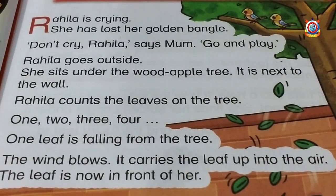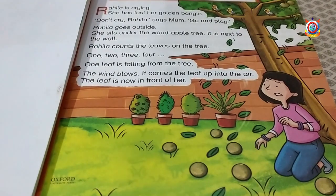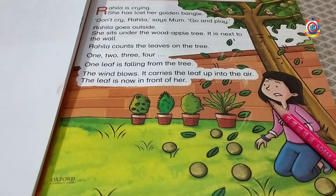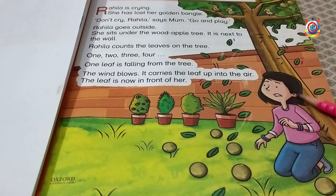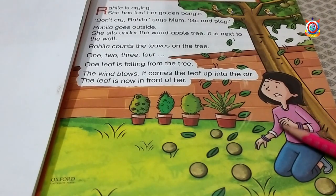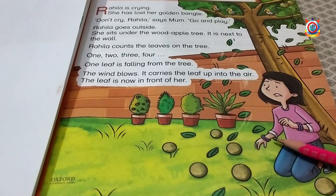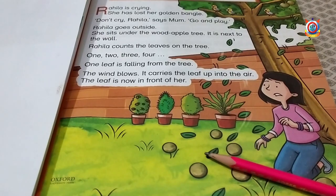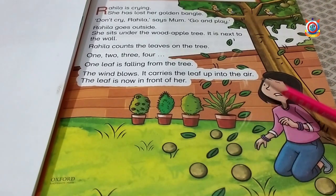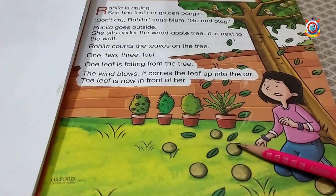This is a very interesting story, students. Let's see what is happening in the story. Can you see this picture? Who is she? She is Rahila, and Rahila is crying. Why is Rahila crying? Because she has lost her golden bangle. Don't cry Rahila, says mum. Go and play outside. Rahila goes outside. She sits under the wood apple tree.